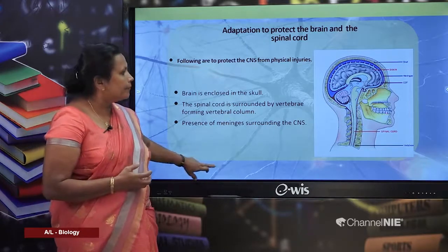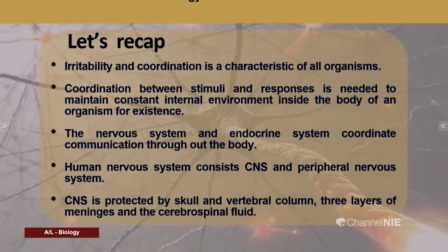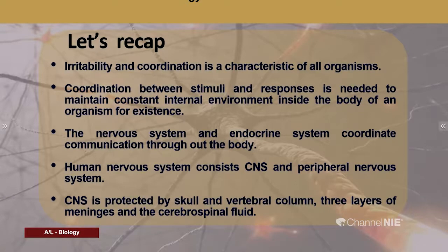Let's recap. Irritability and coordination are characteristics of all organisms. Coordination between stimuli and responses is needed to maintain a constant internal environment for the organism's existence. The nervous system and endocrine system coordinate communication throughout the body. The human nervous system consists of the central nervous system and the peripheral nervous system. The CNS is protected by the skull and vertebral column, three layers of meninges, and cerebrospinal fluid.